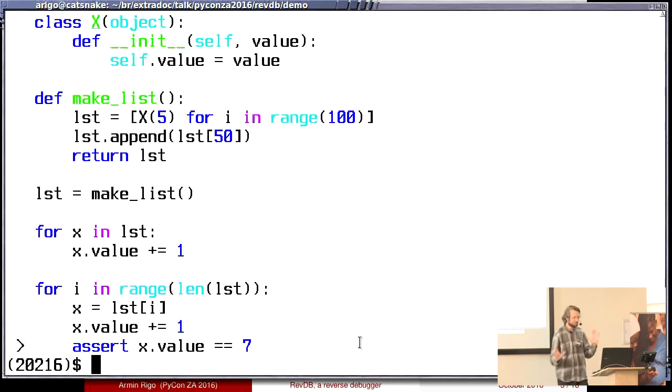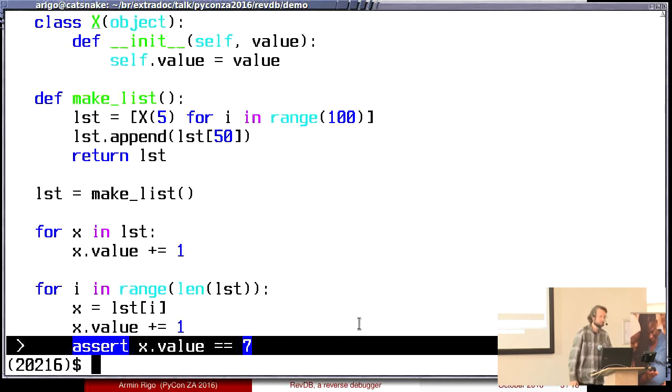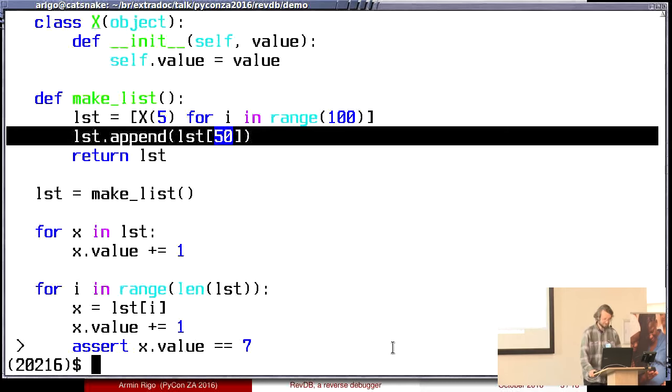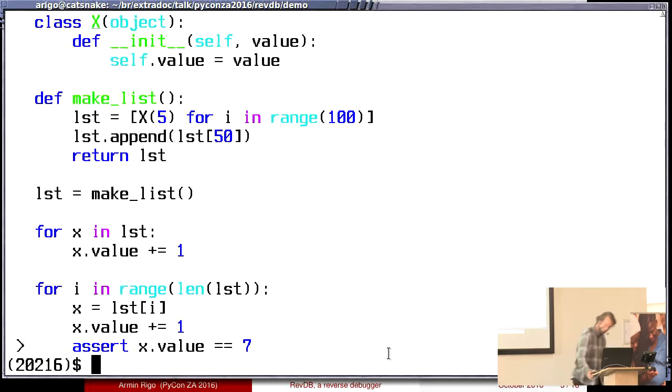Now let's imagine that this program is actually a huge amount of code, the usual big messy program. And you see the assert here that crashes. How do you go from this assert back to this line? Yes, you can spend about one week trying to follow it where it comes from. It's possible. Yes, I've done that.